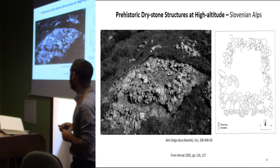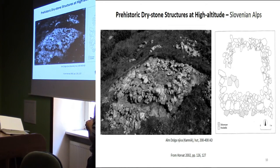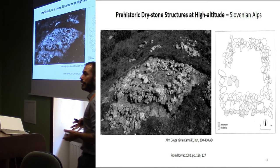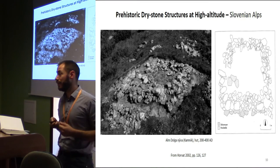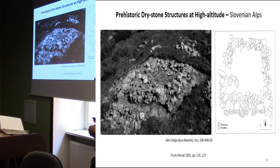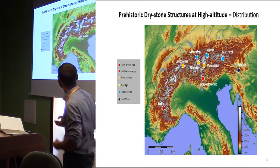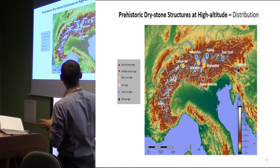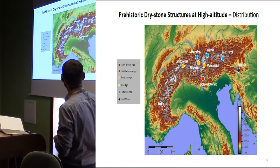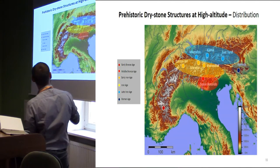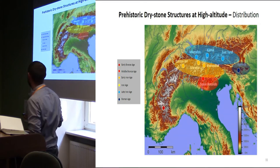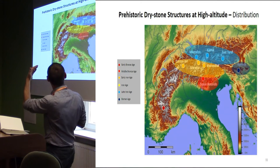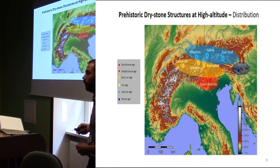If we move east to the Slovenian Alps, the earliest record of dry stone structures at high altitudes is for the Roman Age, although there is clear evidence of human occupation and pastoral activities at these altitudes for the prehistoric and protohistoric periods. If we put all this evidence on a map, we can clearly see a sort of chronological evolution: the Middle Bronze Age in the Italian Alps, early Iron Age in the inner Alps, late Iron Age in the Swiss and Austrian Alps, then the Roman period for the Slovenian Alps.